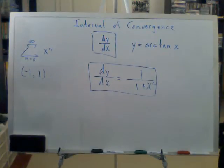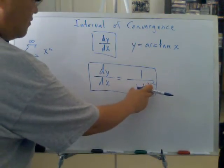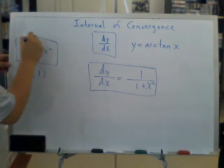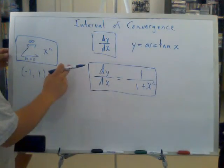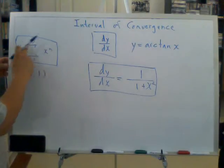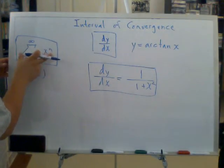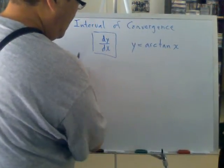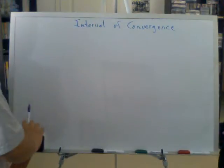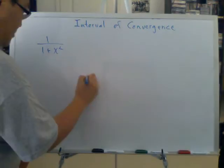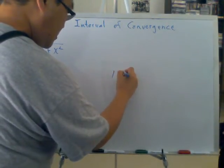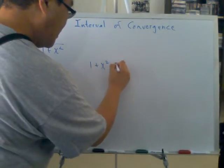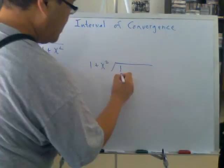But how do you find the interval of convergence for this function? This is going to be part of my presentation. First of all, we want 1 over 1 plus x squared to be similar to this summation series. We try to redefine this fraction into a summation sign. So how do we get from here to a similar summation sign? Well, we do long division of 1 divided by 1 plus x squared.